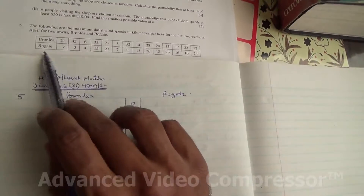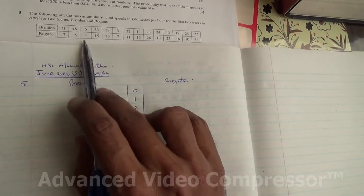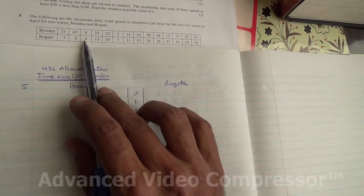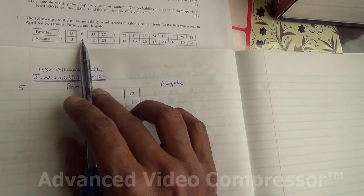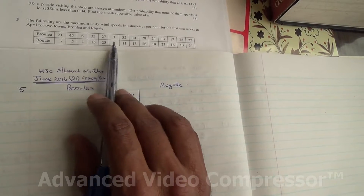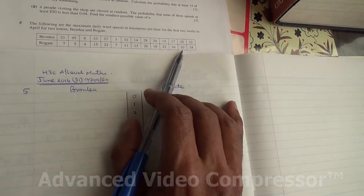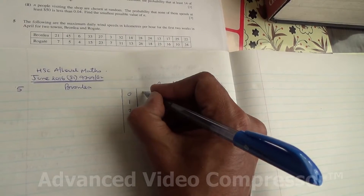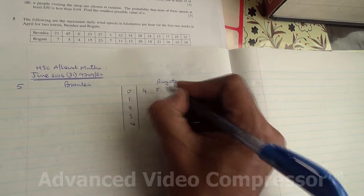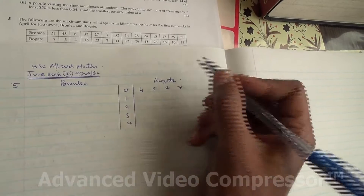Now let's look at all the data. For Rogate, the minimum is 4, and then I have 4, 5, 7, 7 in the single digits range.